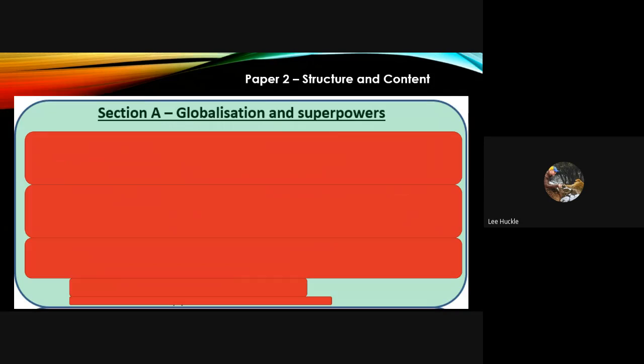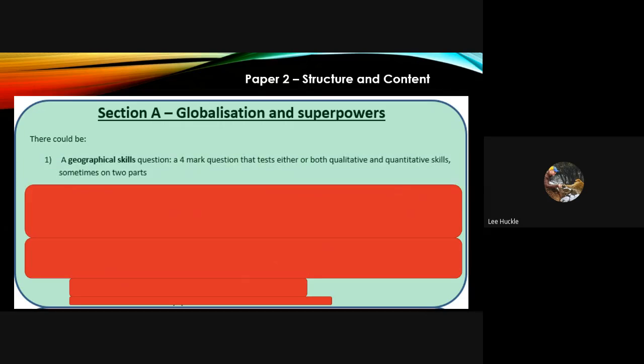Let's break down Section A of the exam paper: globalization and superpowers. We're going to go through what they could be and what we know there will be. There could be in Section A a geographical skills question, a four mark question roughly, which could test either or both of the qualitative and quantitative skills.